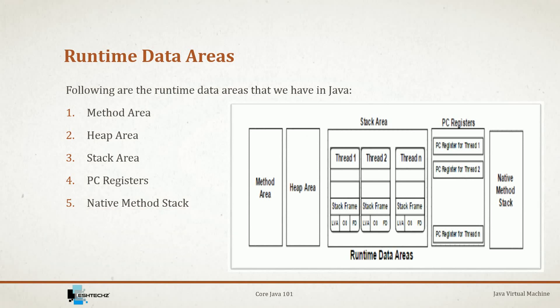The next area is PC registers. PC registers hold the address of the currently executing instruction, and after completion of each instruction, the PC register is updated with the new instruction. The last area is native method stack — true to its name, it holds only native method information, and for every thread a separate native method stack is created. PC registers and native method stack do not participate in object creation.